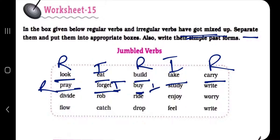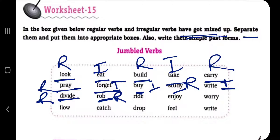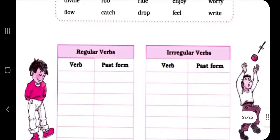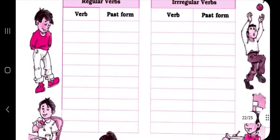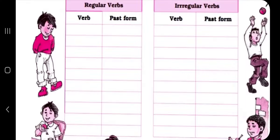'Buy' is irregular. 'Study' is regular. 'Write' — wrote, written — so it is irregular. 'Divide' is regular. 'Rob' is regular. Now let's sort them: regular verbs in one place, irregular in another. First: 'look' — past tense is 'looked.' Next: 'build' — past tense is 'built.'